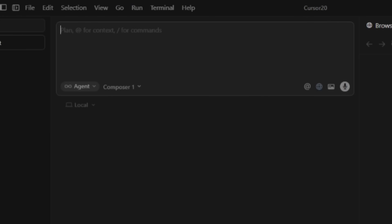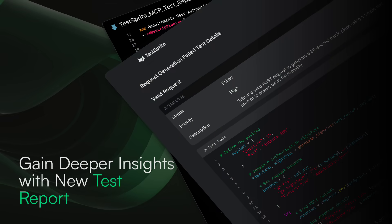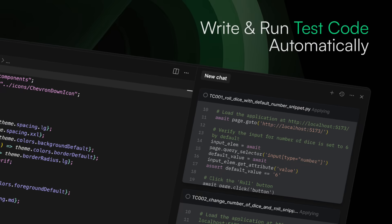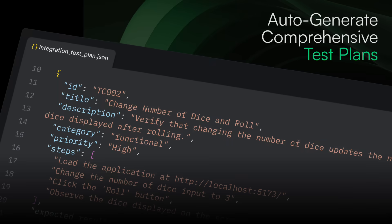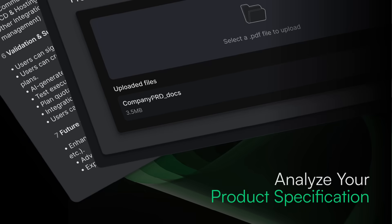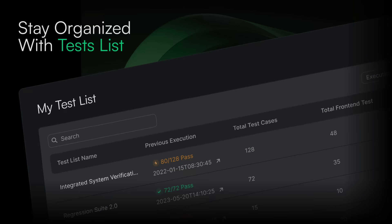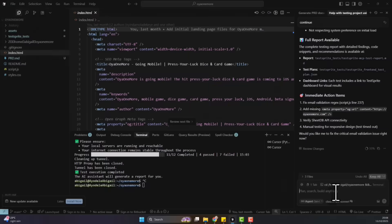Before we proceed, I would like to talk about the sponsor of today's video: TestSprite MCP. TestSprite lets you automate testing your software product as you build, making test-driven development seamless. The MCP connects to any of the popular IDEs like Visual Studio Code, Cursor, etc. It's like a QA engineer built right into your IDE, and it doesn't just check for errors - it runs full front-end and back-end tests automatically. No code, no prompts, just connect it and let it do the heavy lifting.